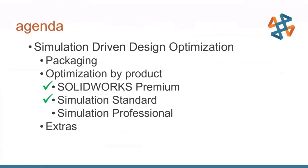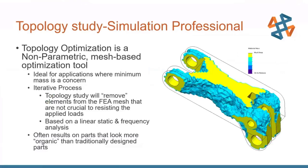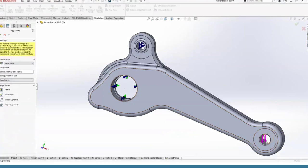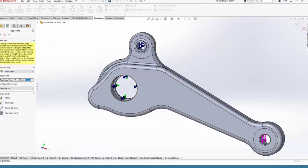Now we move up to Simulation Professional. This is where optimization inside of SOLIDWORKS really shines. We have a few different packages in Simulation Professional for optimization. The main one — and this buzzword has been going around — is the Topology Study. I'm a huge fan of these; my background before being a simulation guy was doing a lot of additive manufacturing work with our Stratasys machines, so I really love being able to marry both of those worlds here at CATI.